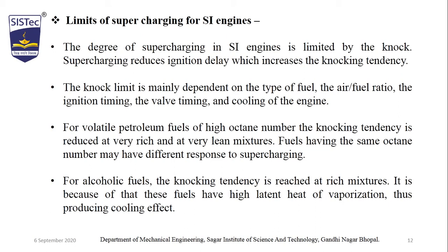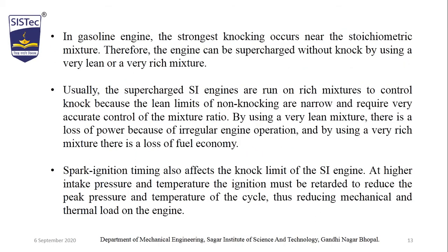In a gasoline engine, the strongest knocking occurs near the stoichiometric mixture — the chemically correct air-fuel mixture of 14.7 grams of air to 1 gram of fuel. Therefore, the engine can be supercharged without knock by using a very lean or very rich mixture. Usually, supercharged SI engines are run on a rich mixture to control knock, because the lean limit of non-knocking is narrow and requires very accurate control of the mixture ratio.